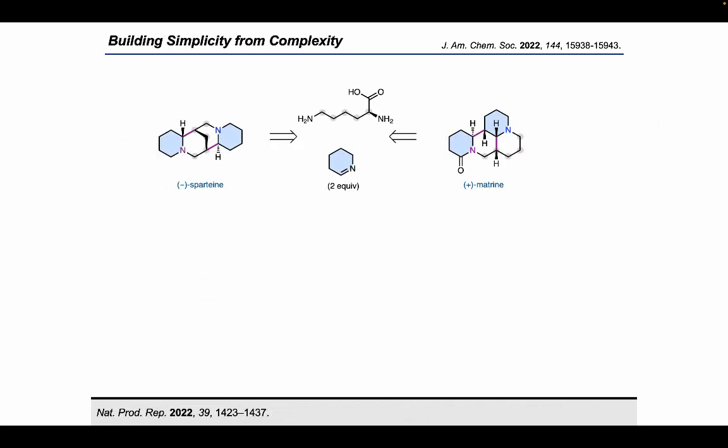Due to the utility of these alkaloids, we were interested in pursuing a total synthesis of them. And we were really inspired by the biosynthesis of the lupin alkaloids to guide our chemical synthesis. In the biosynthesis, it's thought that two equivalents of piperidine imine are cyclized together with lysine, and through a divergent pathway give access to either spartine or matrine.